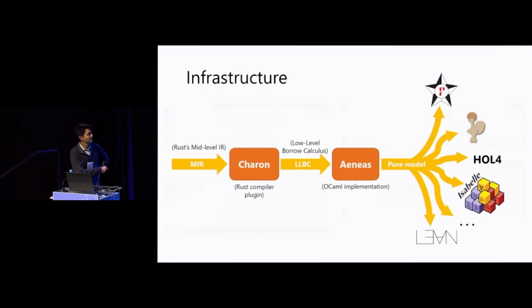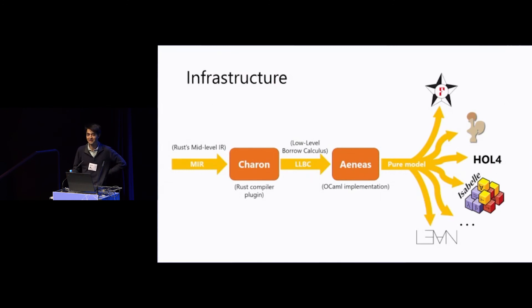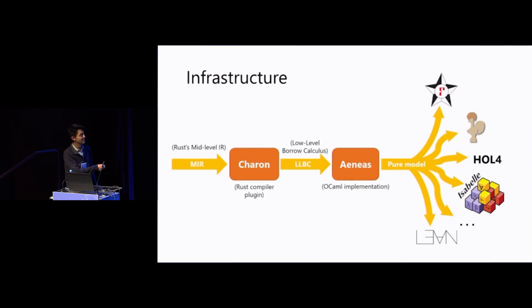This gives us the following framework. On the left we have the Rust compiler, and we wrote a plugin to retrieve its output and convert it to an AST we call the Low-Level Borrow Calculus (LLBC). Interacting with the Rust compiler is extremely technical, so the compiler plugin called Charon provides an easy-to-use interface to generate a simple AST. Then comes the AENEAS translation mechanism, which consumes this AST and generates a pure model extracted to various theorem provers. Currently we have a backend for F*, and we are working on backends for Coq and Lean 4.